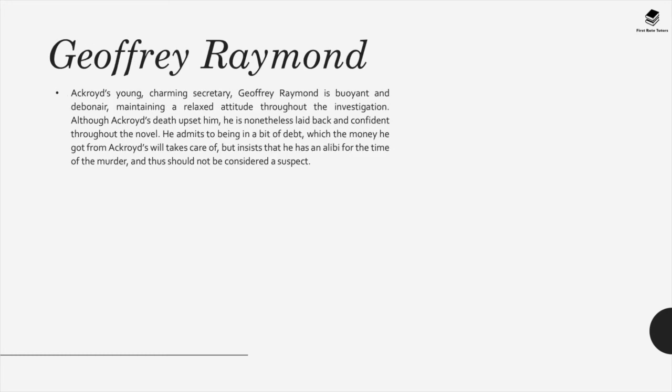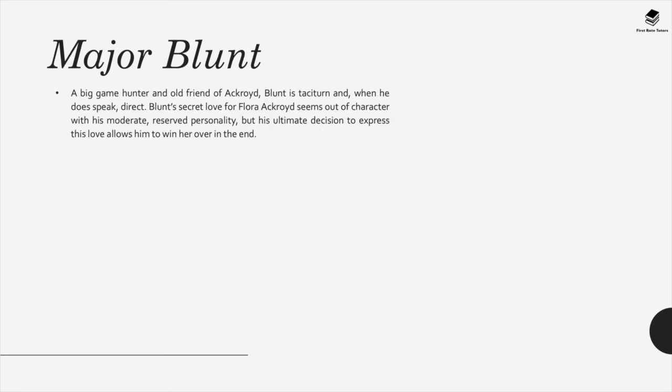Geoffrey Raymond is buoyant and debonair, maintaining a relaxed attitude throughout the investigation. Although Ackroyd's death upset him, he is nonetheless laid back and confident throughout the novel. He admits to being in a bit of debt, which the money he got from Ackroyd's will takes care of, but insists that he has an alibi for the time of the murder and thus should not be considered a suspect. Major Blunt, a big game hunter and old friend of Ackroyd, is taciturn and, when he does speak, direct. Blunt's secret love for Flora Ackroyd seems out of character with his moderate, reserved personality, but his ultimate decision to express this love allows him to win her over in the end.